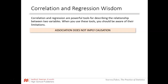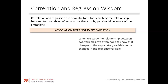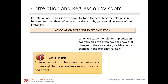Correlation and regression are powerful tools, but you have to be careful of their limitations. Most importantly: association does not imply causation. We're noting a relationship — as one increases so does the other — but we can't say one caused the other. When we study the relationship between two variables, we often hope to show that changes in the explanatory variable cause changes in the response variable, but a strong association alone does not establish causation.